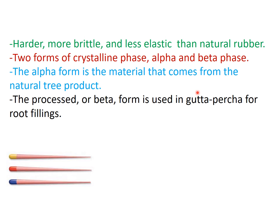Gutta-percha is harder, more brittle and less elastic than natural rubber. It has two forms of crystalline phase: first is the alpha and then the beta phase. The alpha form is the material that comes from natural trees, while the processed or beta form is the gutta-percha found in root filling cones.